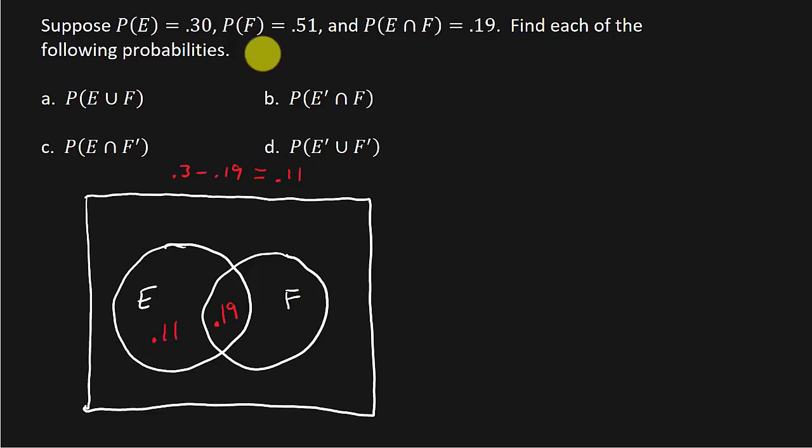And then the same thing for F is 0.51. So the whole entire circle has to add up to this 0.51. So we have 0.51 minus 0.19. And that is equal to 0.32. So this is 0.32.